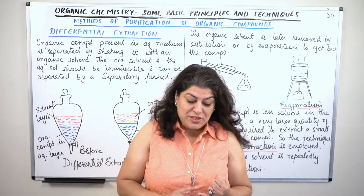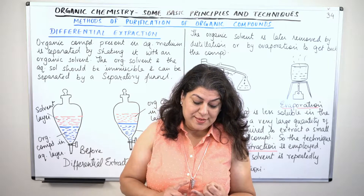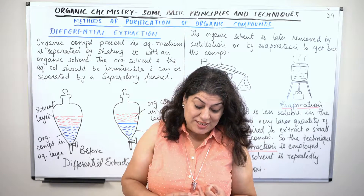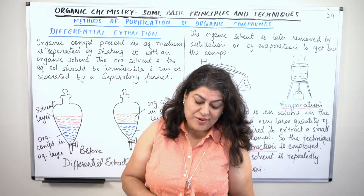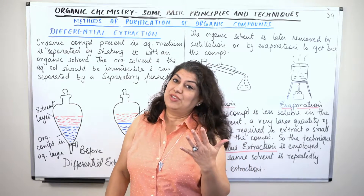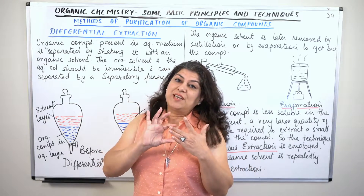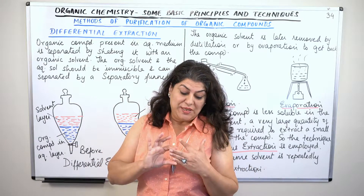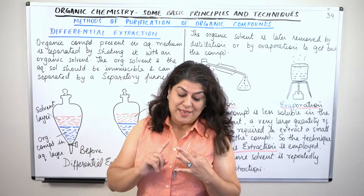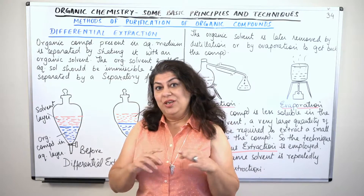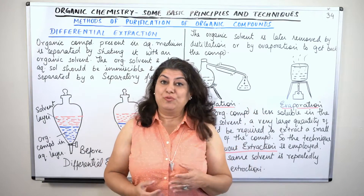The first method is sublimation, the second is crystallization, the third is distillation, the fourth is differential extraction, and the fifth is chromatography. We have already discussed the first three — sublimation, crystallization, and distillation — in the previous few videos.